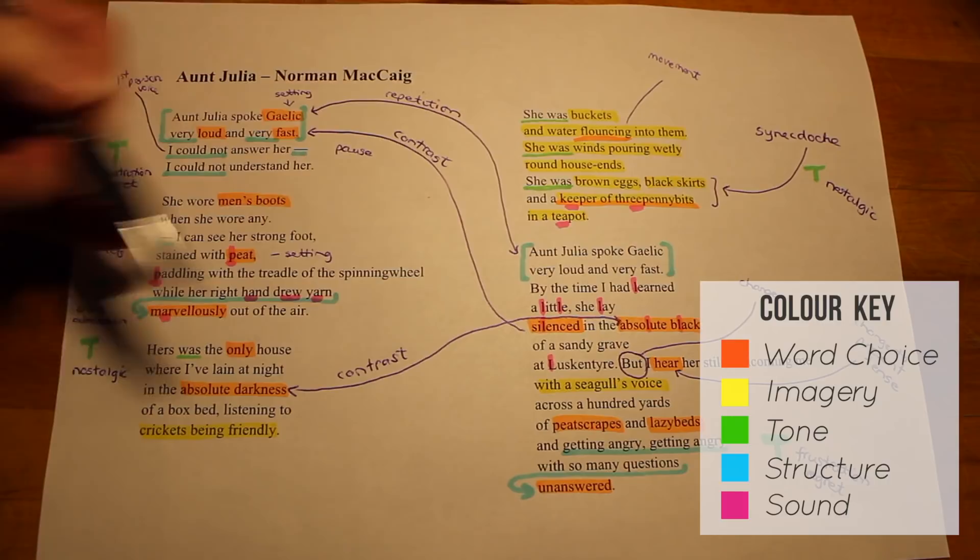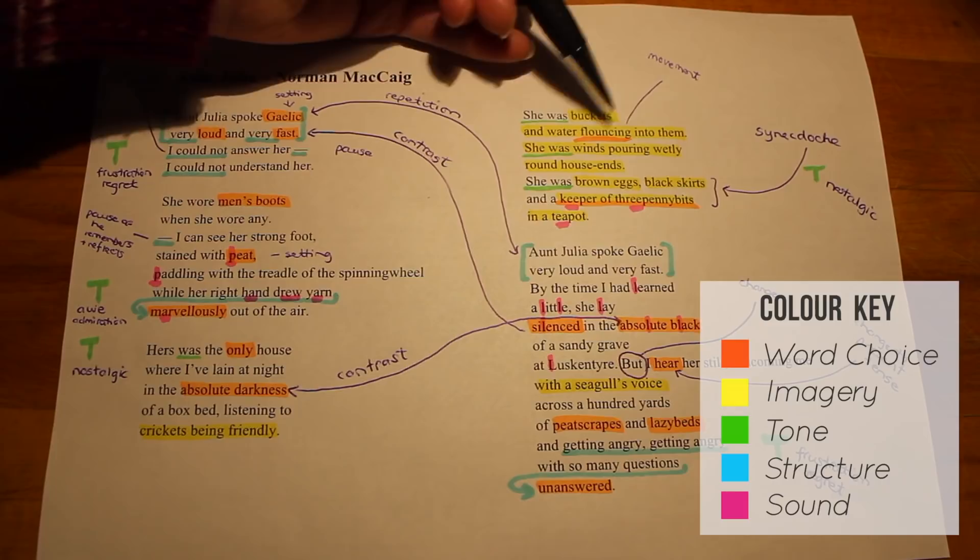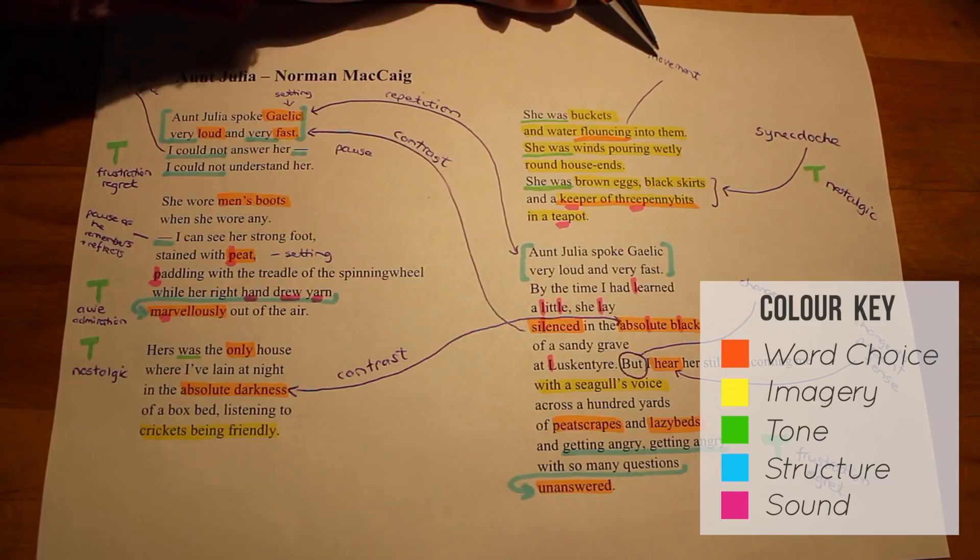Moving on to the next stanza here, he describes her in terms of the elements, water and wind. She was, he says, buckets and water flouncing into them. And the word choice of flouncing in this metaphor shows us the movement, the way that she moved was confident and jaunty.